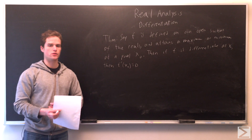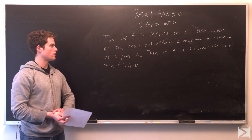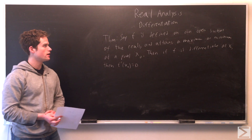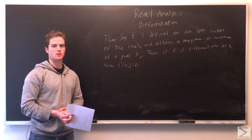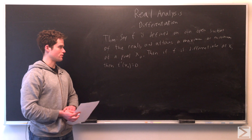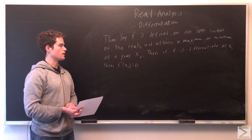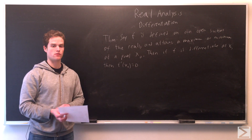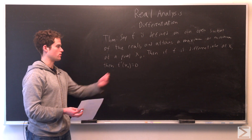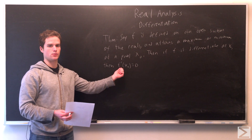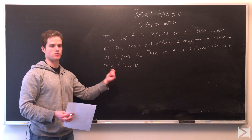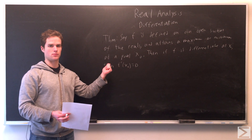One often used result: if f is defined on some open subset of the reals and has a maximum or minimum at some point x₀, and if f is differentiable at this max or min, then f prime of x₀ has to equal zero — because if it were nonzero that would contradict it having a max or min at that point.